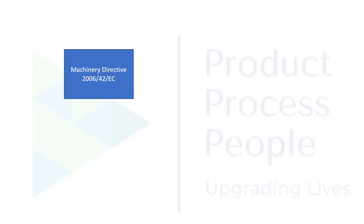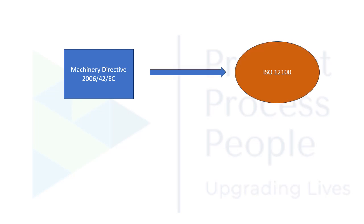There is a Machinery Directive known as 2006/42/EC, and this directive directly refers to ISO 12100 for safe design of machinery. So when you design a machine according to ISO 12100, it automatically complies with all the health and safety requirements of the Machinery Directive, meaning you can sell and use the machine in any European Union state without any problem. That is the significance and purpose of ISO 12100.